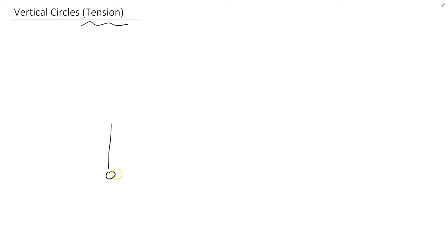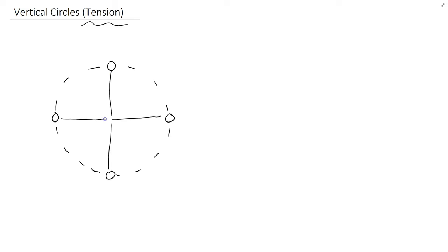The Around the World is an example of a vertical circle. To analyze it, we look at tension in the string. Draw a ball attached to a string going in a vertical circle, and draw this ball at four locations: the bottom, the top, and the two sides. Each of these locations has a weight force pointing down — mg at every position.